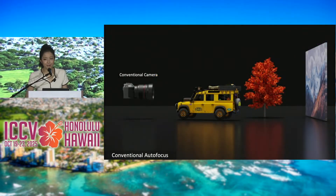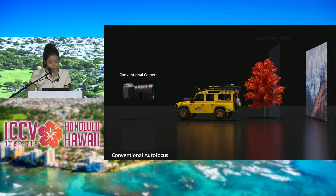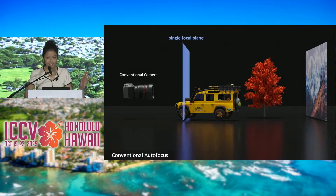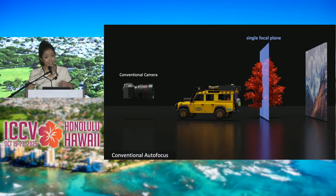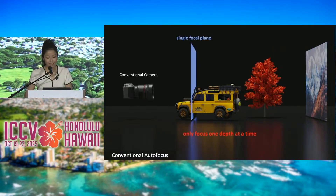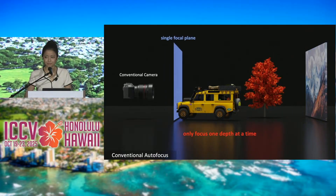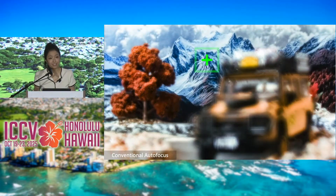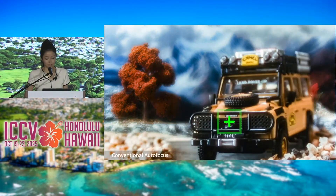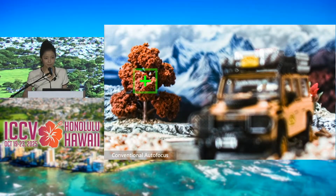A camera lens is designed to focus a single depth onto the sensor. The focal plane can be adjusted; however, most cameras today can only focus one depth at a time. In practice, when we focus on a background, the car blurs. Focusing on a car, the background blurs.